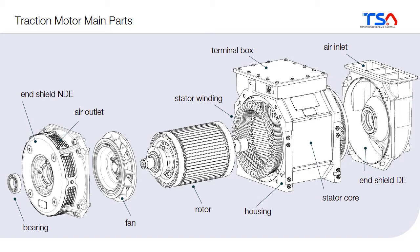Typically there is a stator, which is the non-rotating part. The stator consists of the stator core, which is basically made of iron sheets — there is a lamination, and many iron sheets put together form the stator core. Also in the stator there is the stator winding. You can see the winding heads, but they go through the stator core and then go back. Through the stator winding the current will flow. This is the non-rotating part of the machine, together with the end shields on both sides.